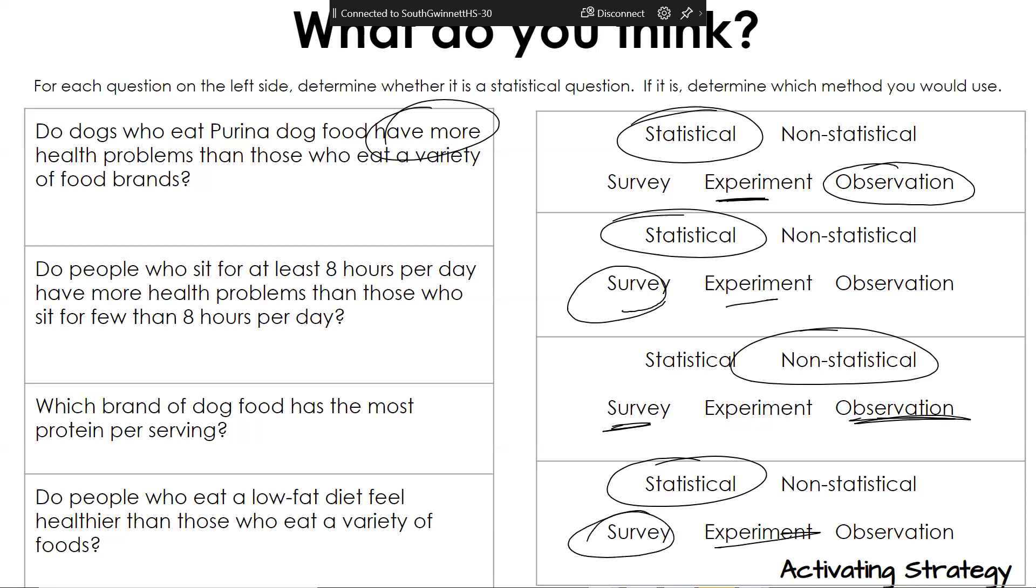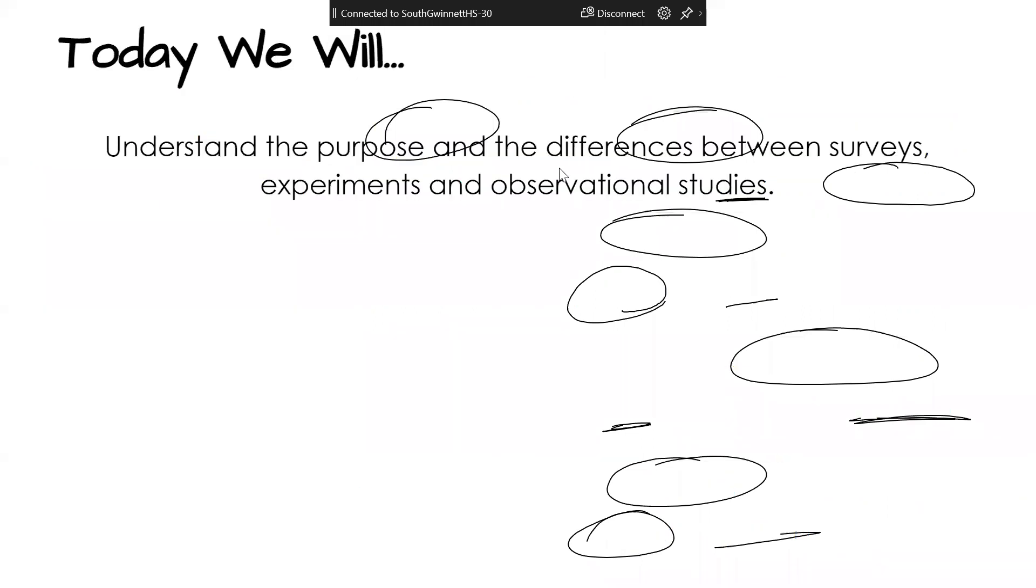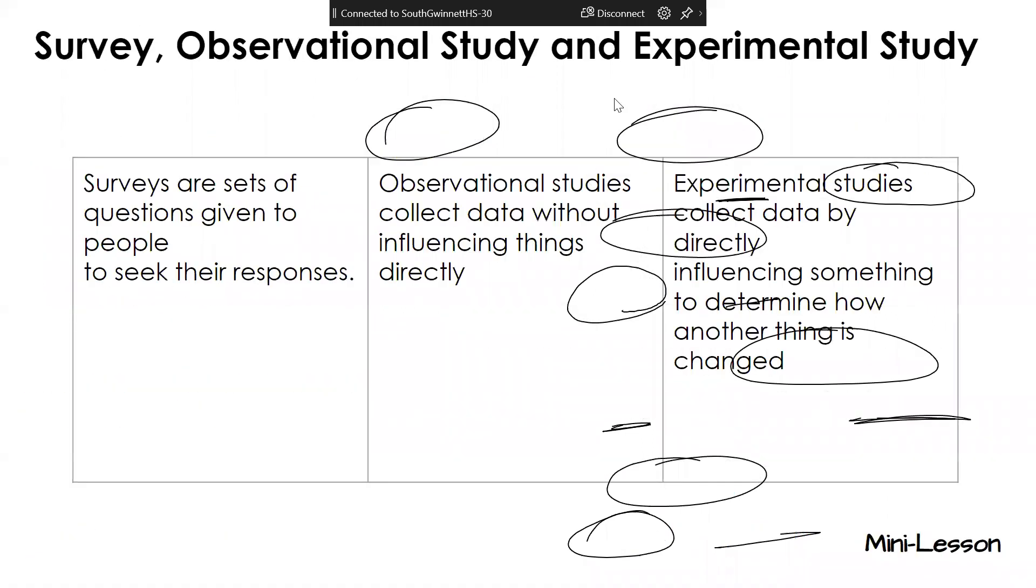When we base things on feelings, we're asking somebody their opinion. Now, one thing to mention on this is you could change these just a little bit to make them different things. You could make it an experiment if you randomly select things. We're going to talk about the difference between these three today.